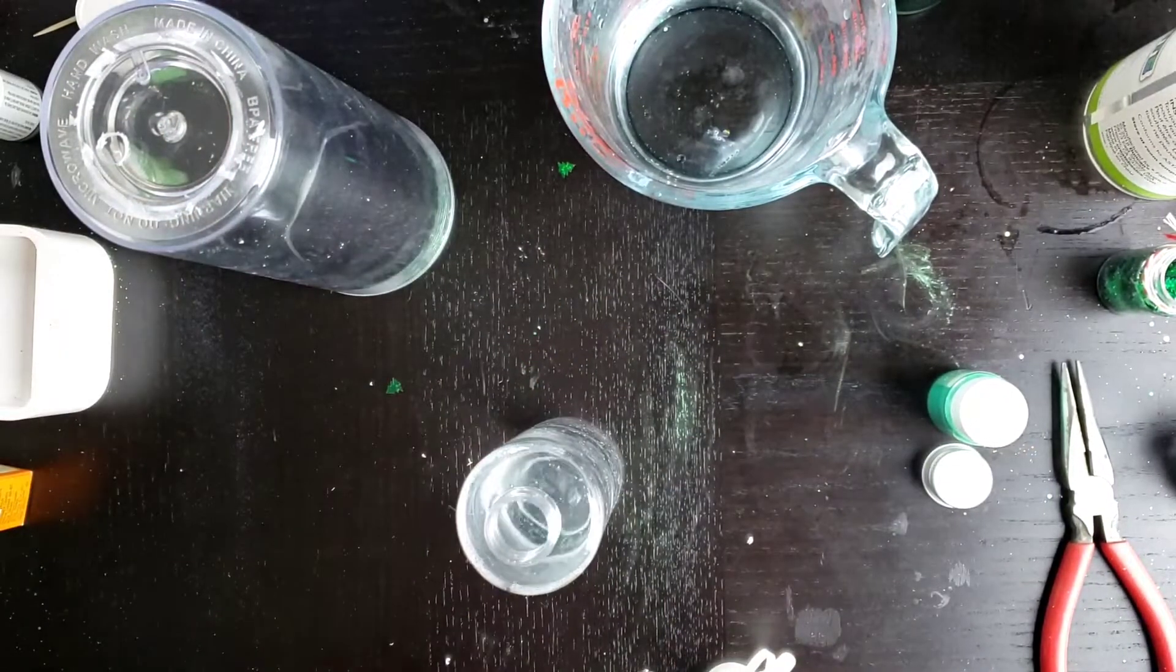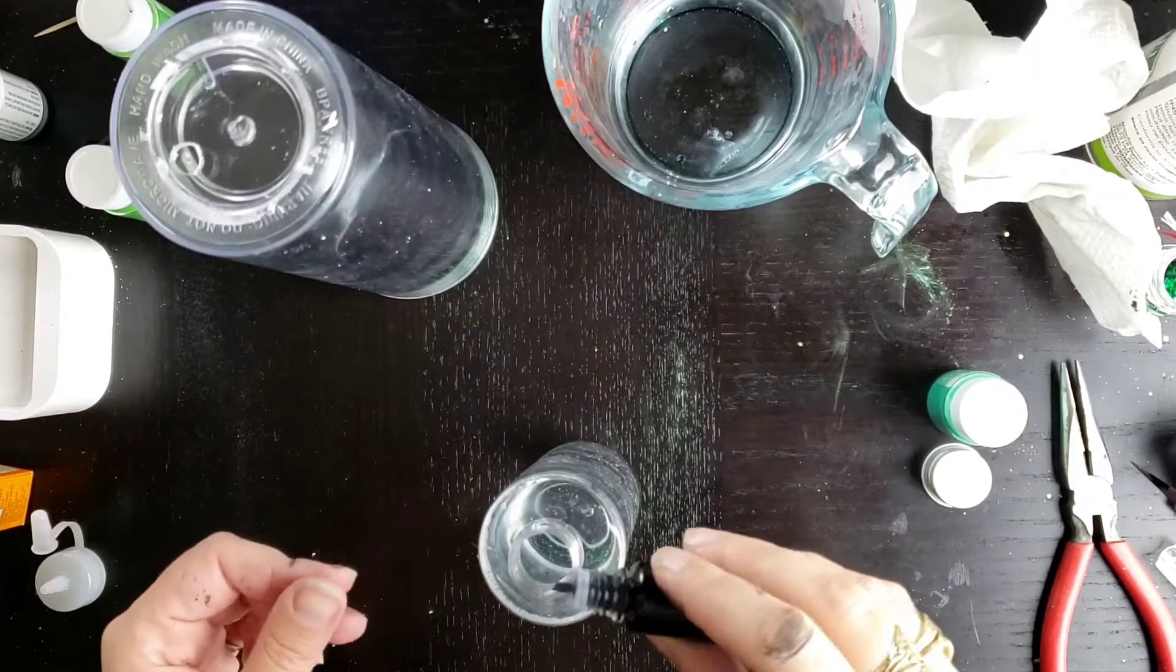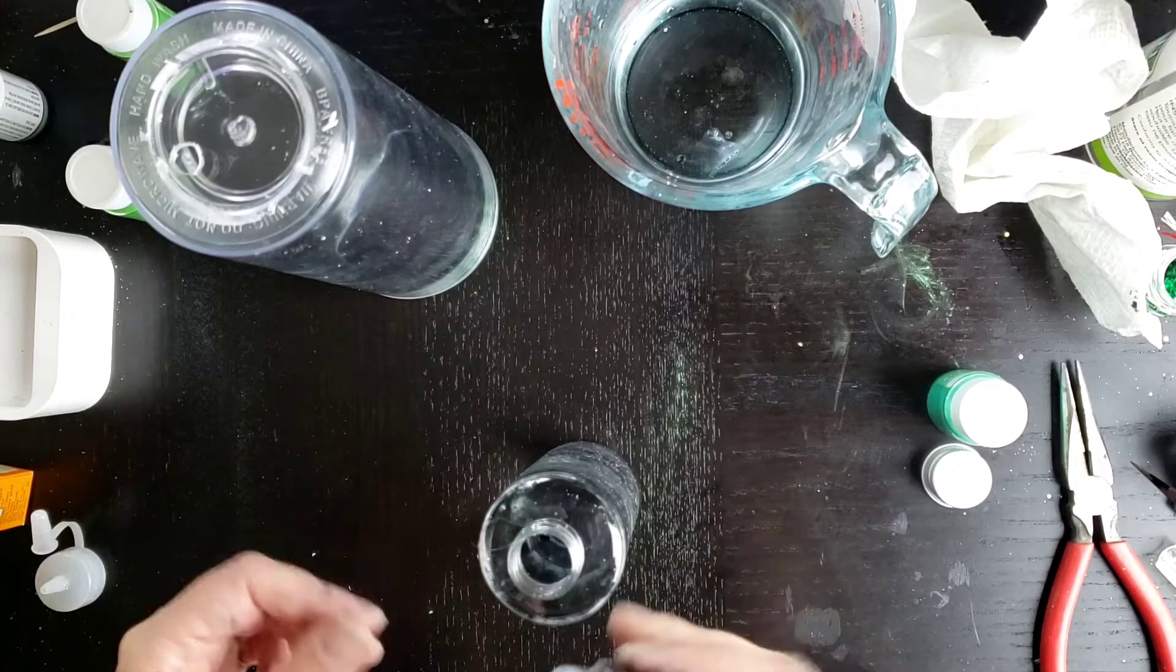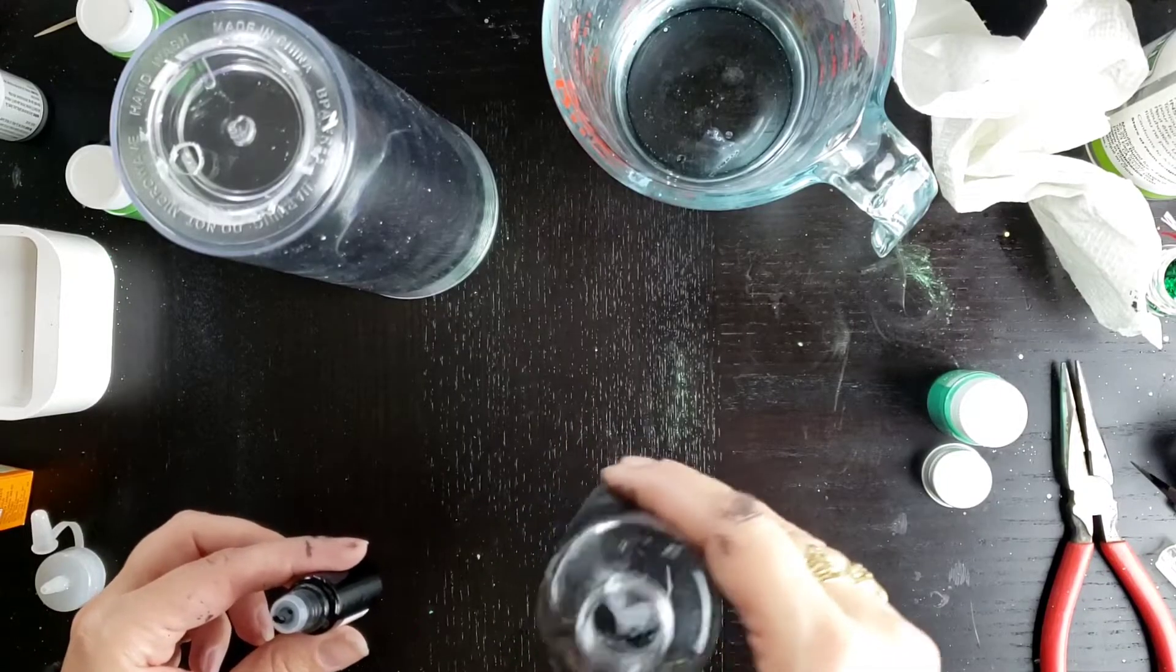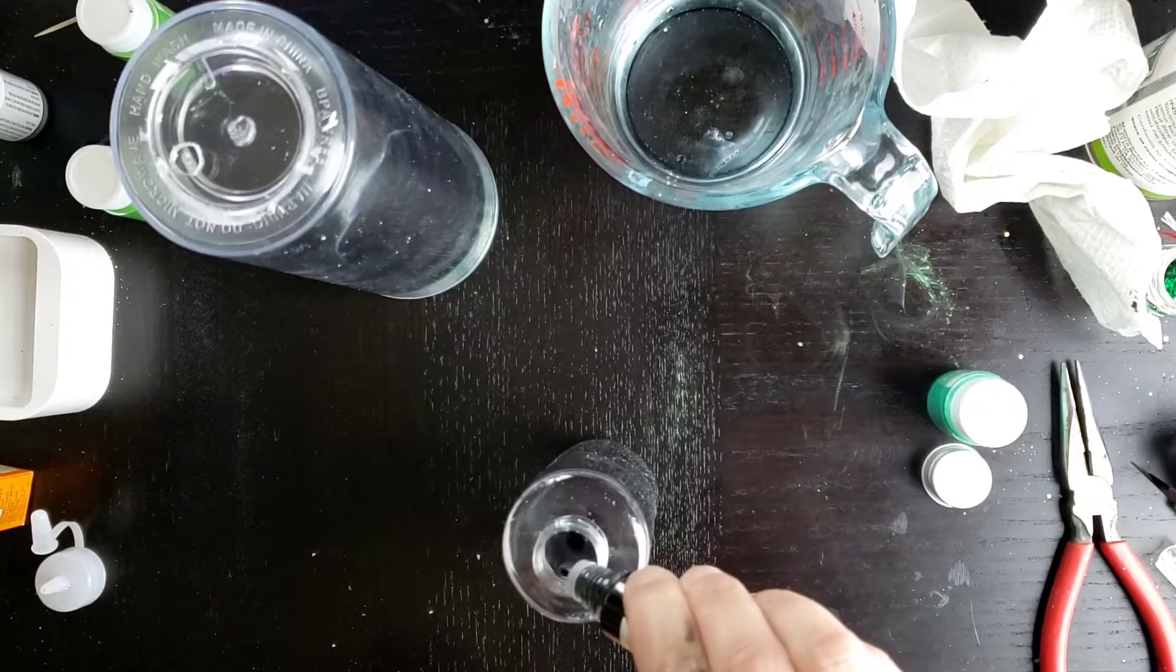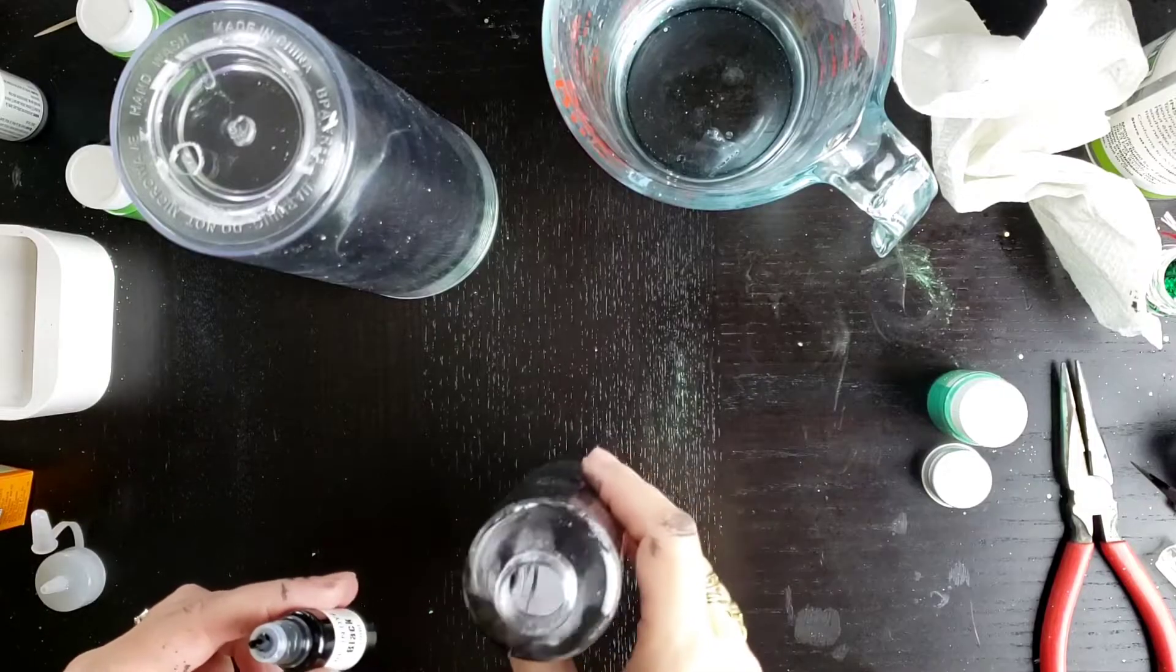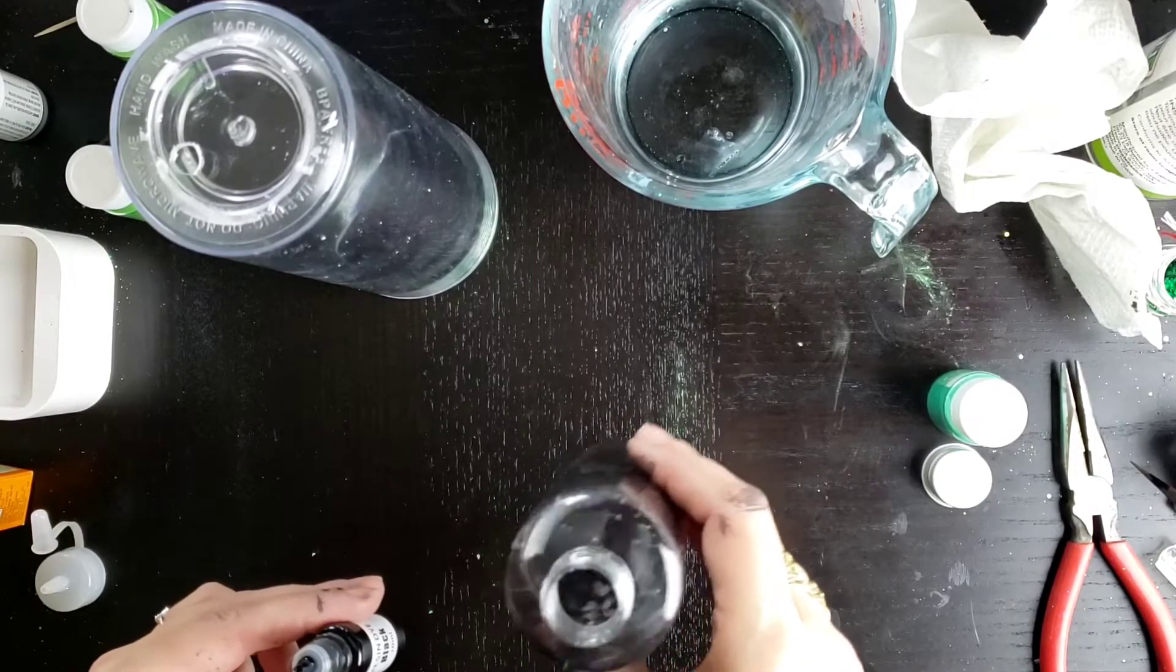So we're going to take our squeeze bottle and we're going to add some of our alcohol ink into there. We're just going to add a couple drops in there. We'll add a couple more. I don't want to make this too dark. I mixed up a batch earlier to try out and it was just a little too dark. We don't want this too dark.